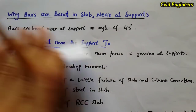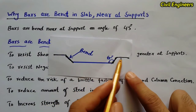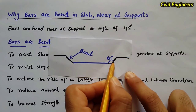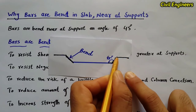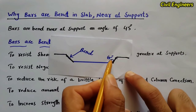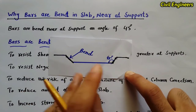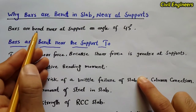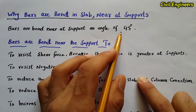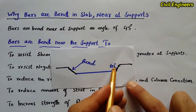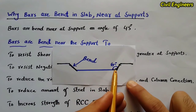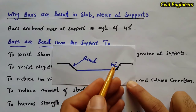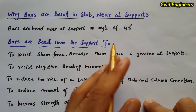First of all, I will tell you the shape of a bent-up bar in a slab. This is the steel bar, and we bend the bar near at the support at 45 degrees. So near at the support we bend the bar with 45 degrees. We can also bend the bar in a beam with 45 degrees.